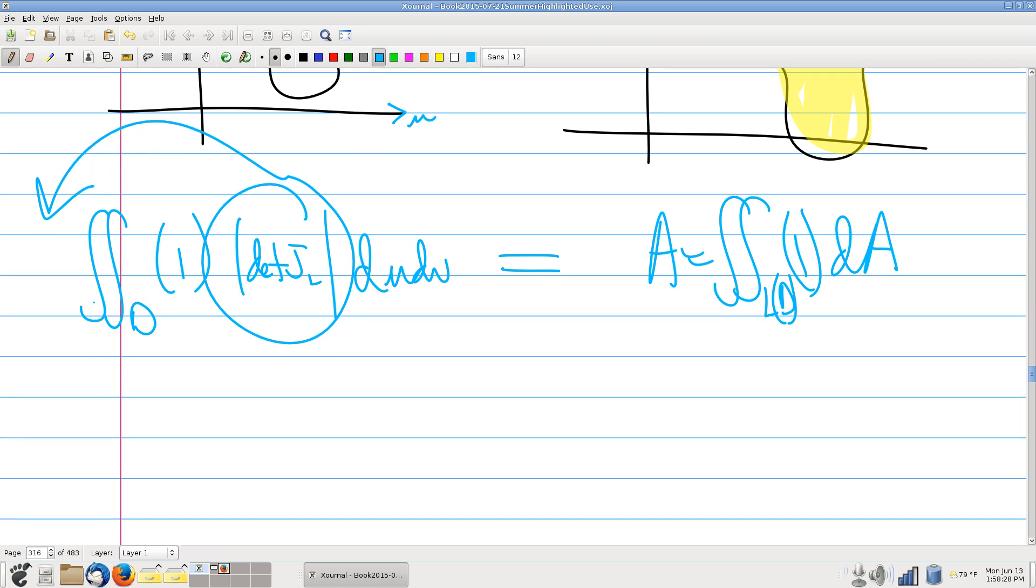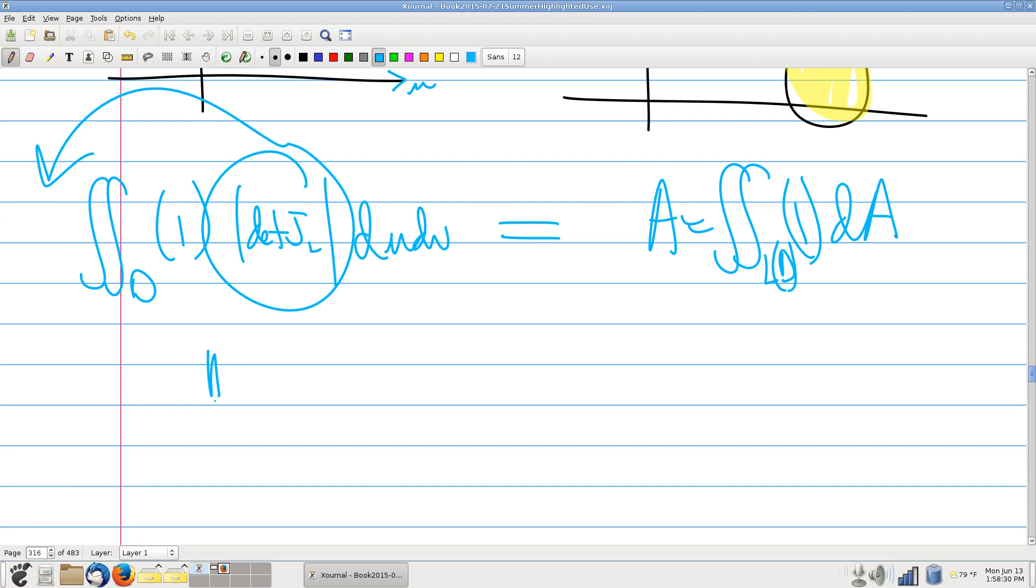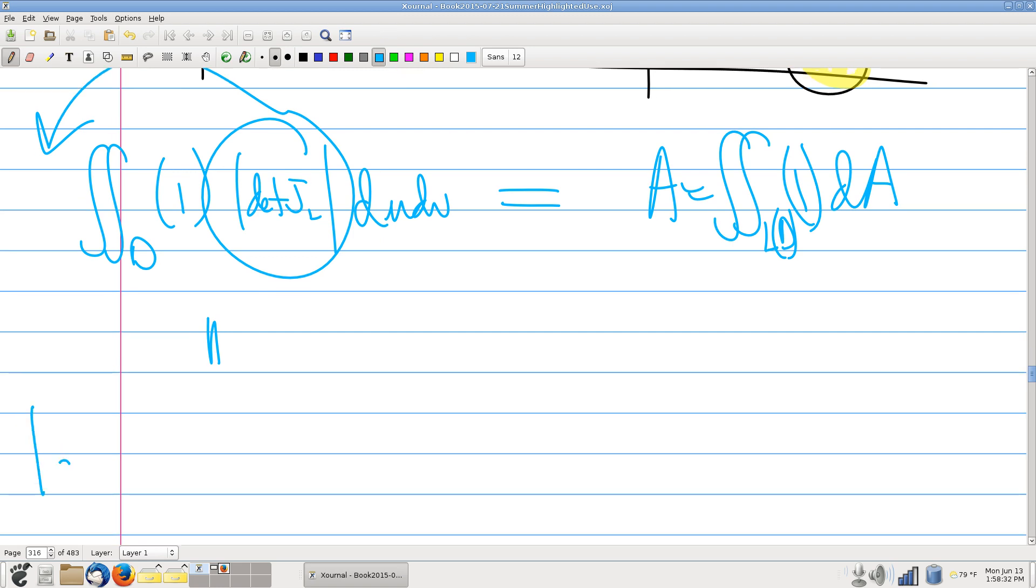Okay. So that, then, is absolute value of the determinant of the Jacobian times double integral over D of 1 dU dV.